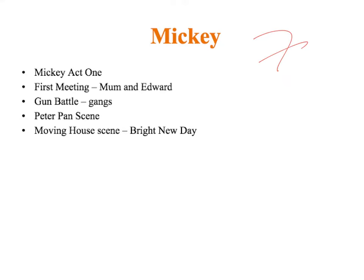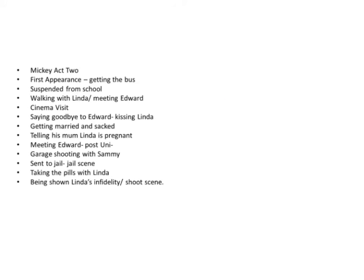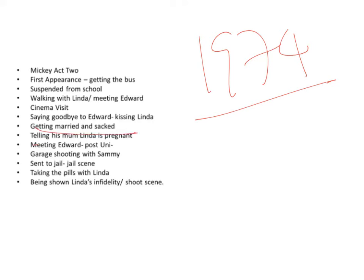Mickey follows exactly the same timeline — seven years old in 1967, then 1974 at the start of Act 2. A big moment for Mickey would be when he gets married. Look at the stage direction — it makes clear that Mickey gets married on the way to work, so it's not going to be a top hat and tails outfit. That might be an interesting costume choice to think about. Then that takes Mickey to the prison scene and his life on the pills, in the early 1980s before he dies.